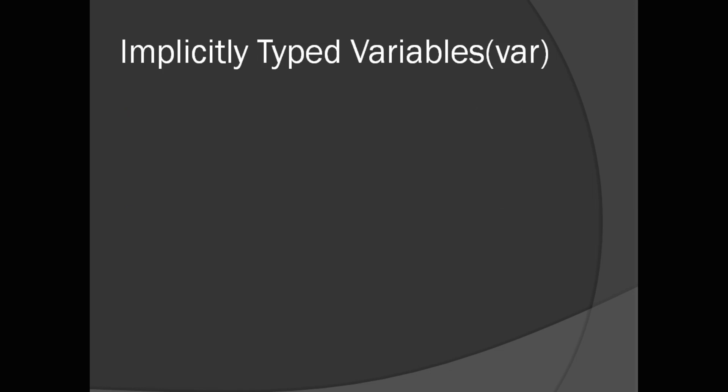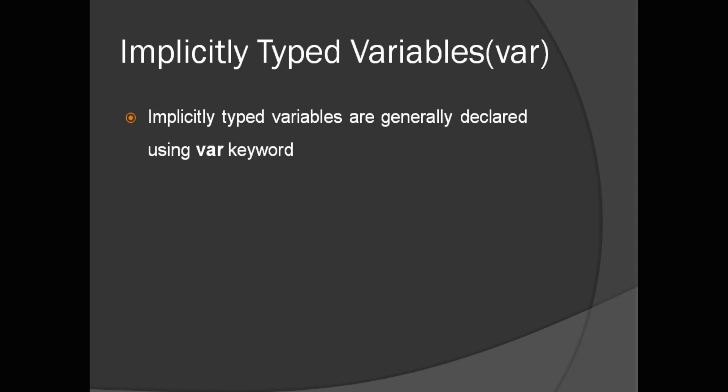Now let's see how to use implicitly typed variables in C#. They are declared using the 'var' keyword. While declaring, instead of using any specific data type, you write 'var' followed by your variable name. Let's also look at one more important point related to 'var'.